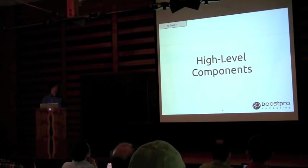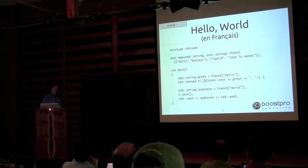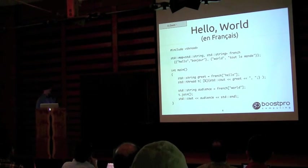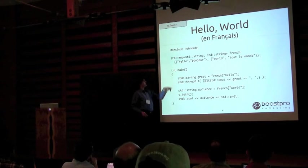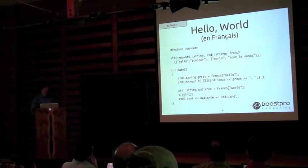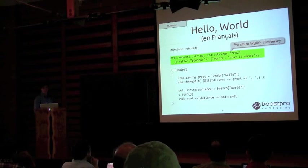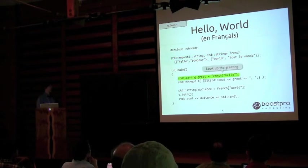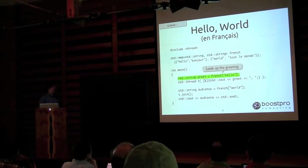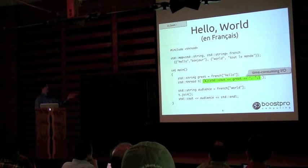Let's look at the high-level components. The main one you'll be using to start out with is std::thread. Here's a little example program in C++11. You can see I use the direct initialization syntax to set up the map. We're just mapping English words to French words, and we want to print out hello world in French.